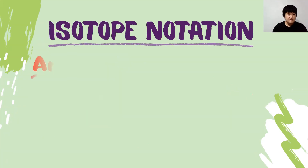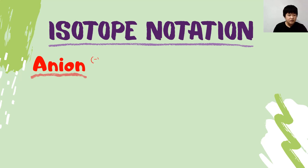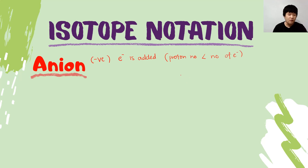Now for anions. An anion is a negatively charged ion formed when an electron is added to the atom. This results in the proton number being less than the number of electrons. The isotope notation looks like this — same structure, but with a negative charge in the top right corner.